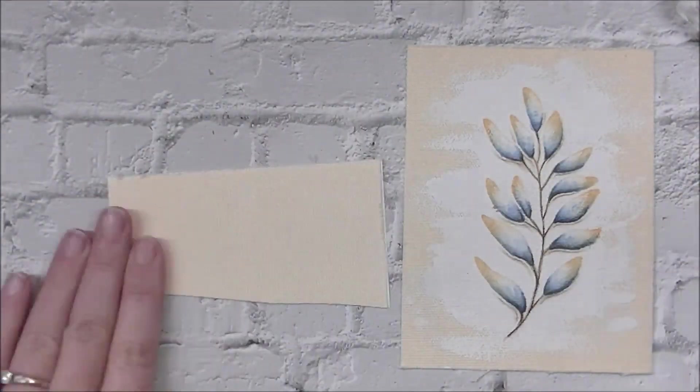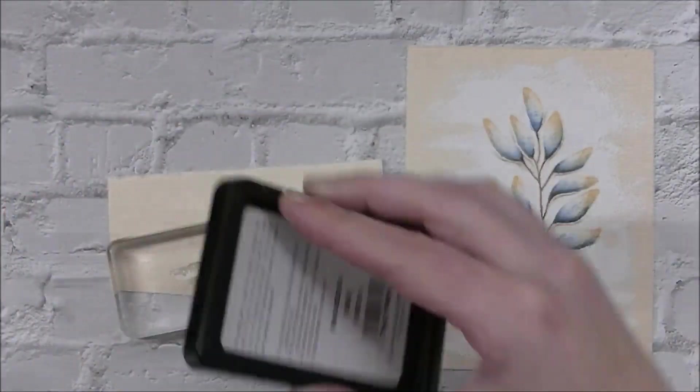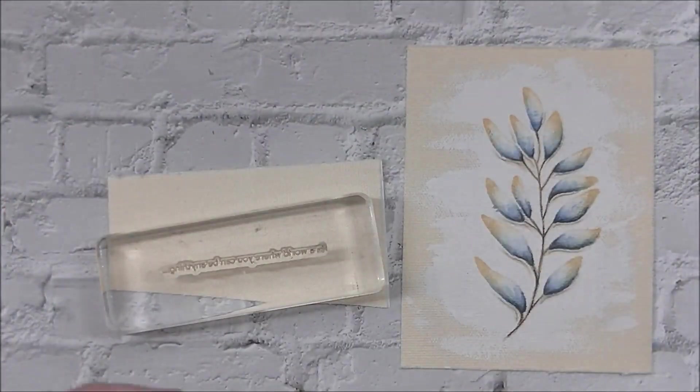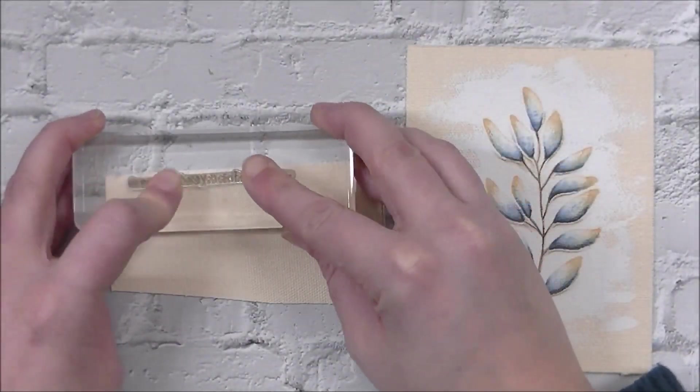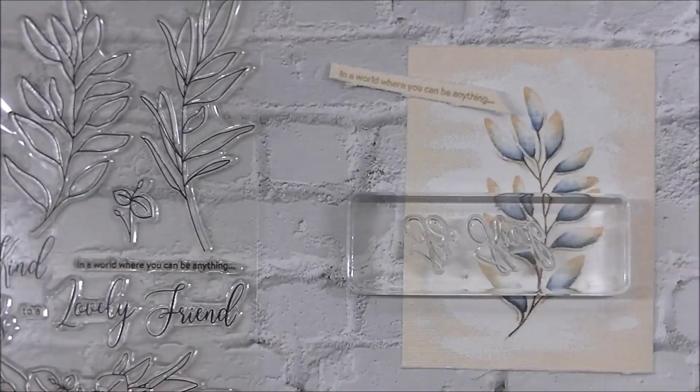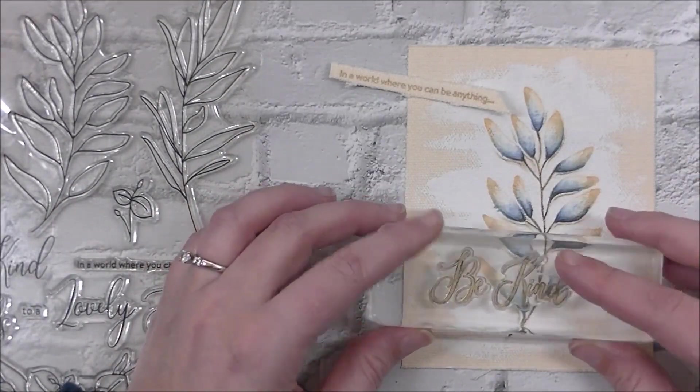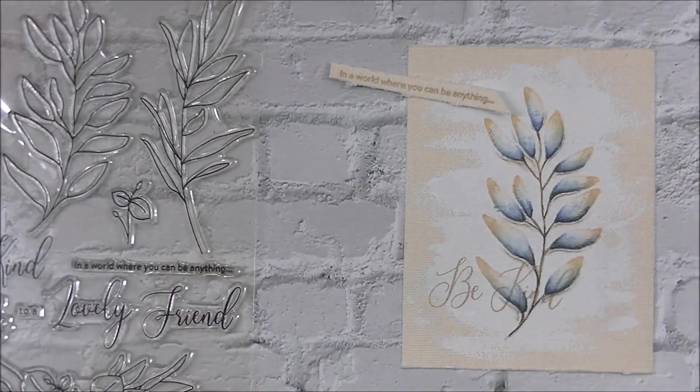I'm going to pull out a scrap of this sticky back canvas and the sentiment strip that says 'in a world where you can be anything dot dot dot.' We're going to use the khaki ink pad from Simon Says Stamp to stamp that on the very top here, cut it out in a little strip. I don't think the strip was straight, but that's okay.